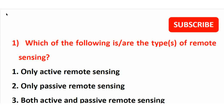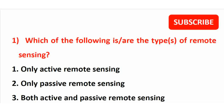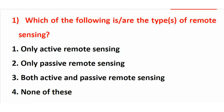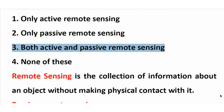Let's discuss the previous survey questions in the video. Which of the following is the type of remote sensing? Options are: only active remote sensing, only passive remote sensing, both active and passive remote sensing, or none of these. Remote sensing collects information about an object without physical contact. There are two types: active remote sensing and passive remote sensing. So the right answer is option 3 — both active and passive remote sensing.